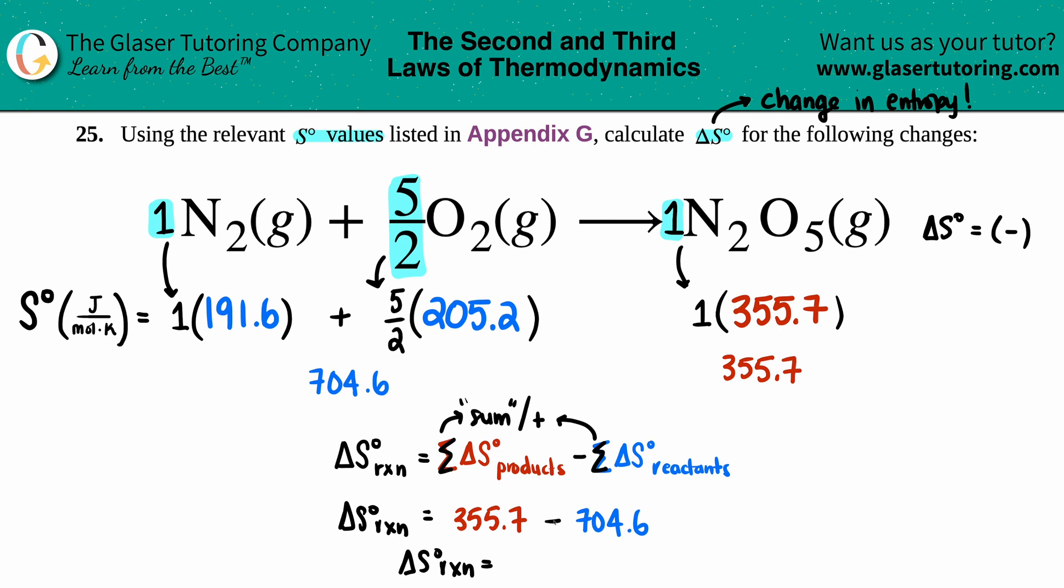My delta S for the whole entire reaction is 355.7 minus 704.6, which gives me negative 348.9. The units are the standard S units from the appendix: joules per mole times Kelvin. We can box that answer off.